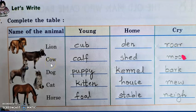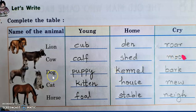Next is cow — the young one of a cow is called a calf; the cow lives in a shed; and they moo. Dog — the young one of a dog is called a puppy; the dog lives in a kennel; and they bark.